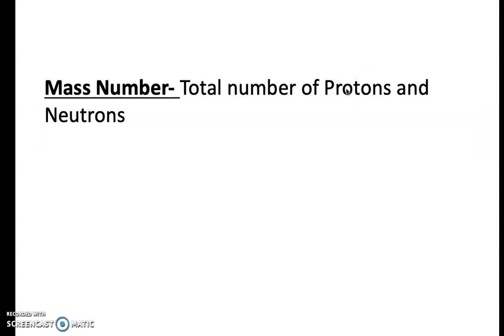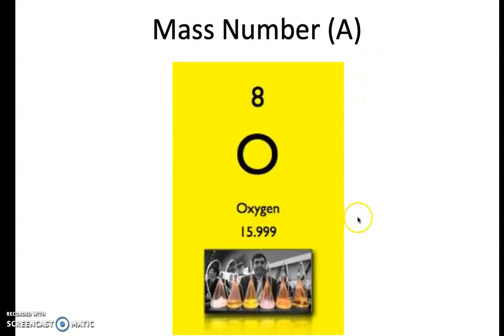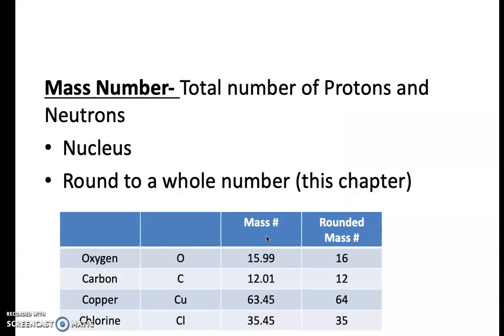Now, the next important part of the periodic table is the mass number, which is the total number of protons and neutrons. So it's protons, essentially, plus neutrons. Now, this is the number right down here, mass. It's 15.999. Why are there decimals there? Well, it has to deal with how it's calculated. The mass number is essentially the weight, or most of the mass of the element, and it's found in the nucleus, protons and neutrons. And in this chapter, we're going to round to a whole number.